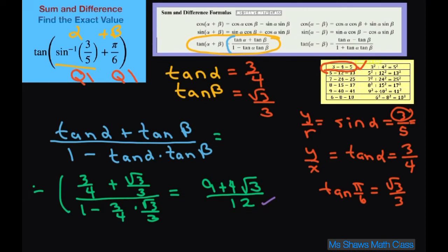So basically what I did is multiply this by 4, so this by 4, this by 3, so this by 3. So that just gives me that. And the denominator is going to be, we're going to have the same denominator 12. So this is going to be 12 minus 3 square root of 3.